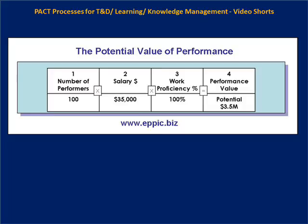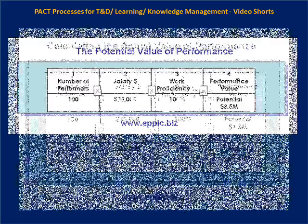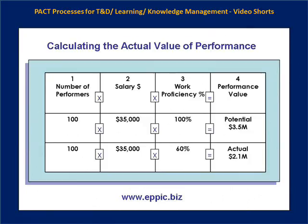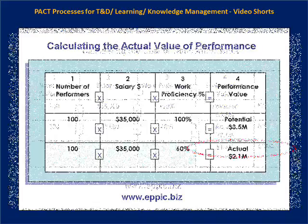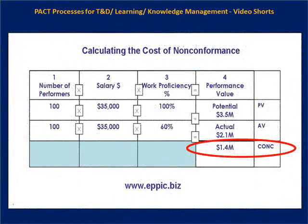But are we getting 100% work proficiency? No, we were not. Were we getting 60% work proficiency? No, it was actually worse than that. So when you did the math and found out that you're only getting $2.1 million at the high side — because it's actually worse than that — but you're paying $3.5 million for that performance, you're leaving on the performance table, so to speak, $1.4 million a year.